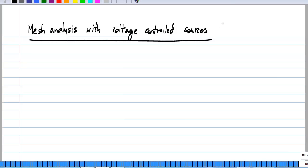Now, we will look at how to carry out mesh analysis when we have voltage controlled sources, that is a voltage controlled voltage source or a voltage controlled current source.